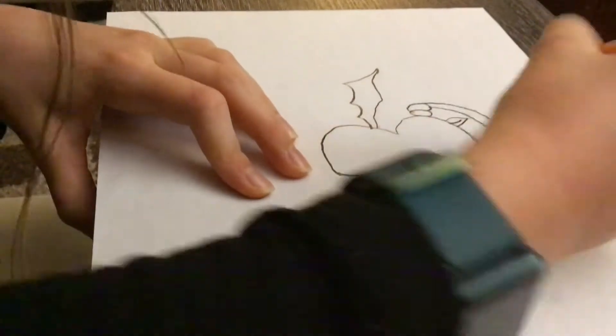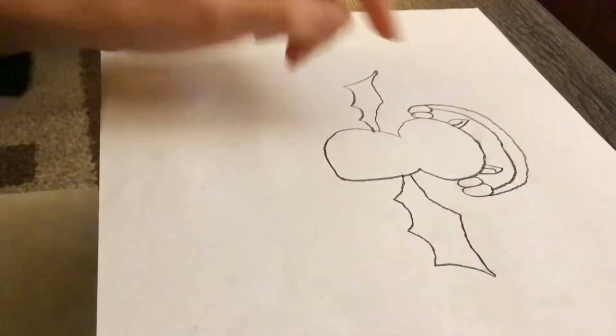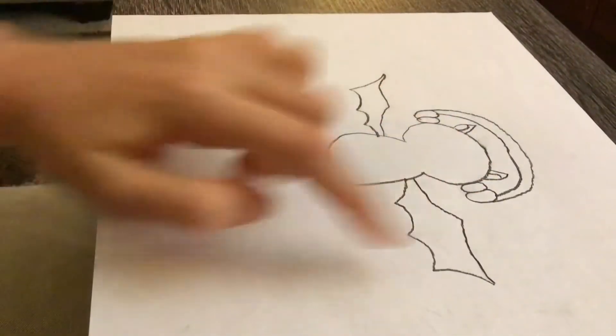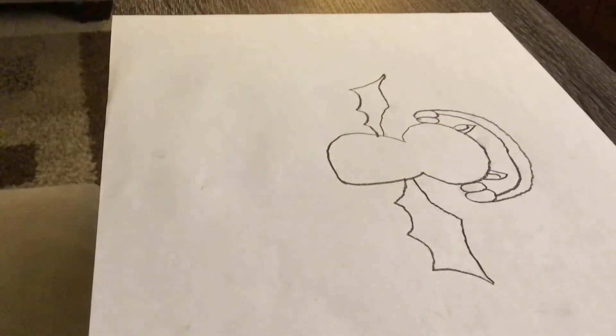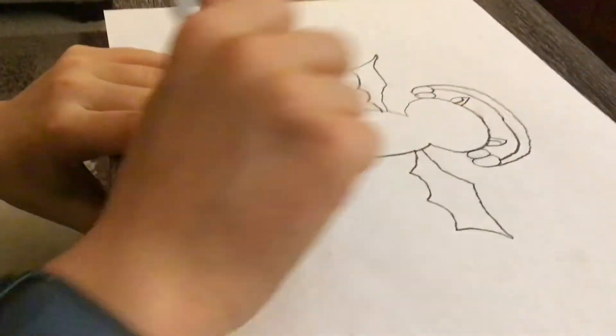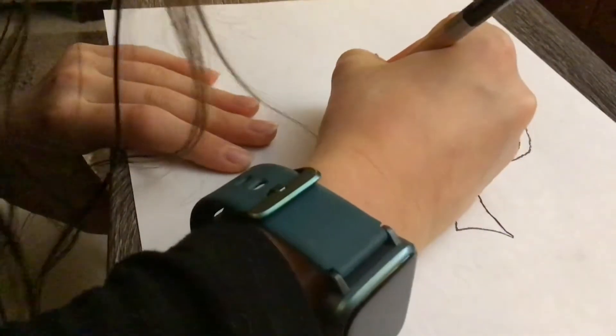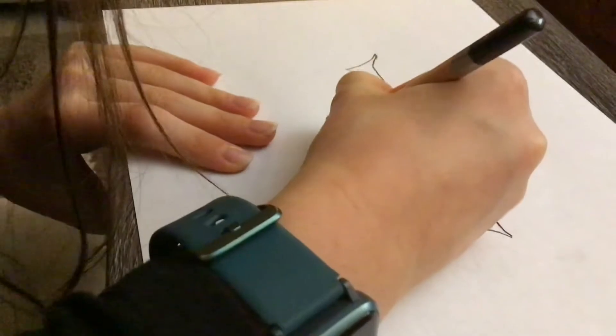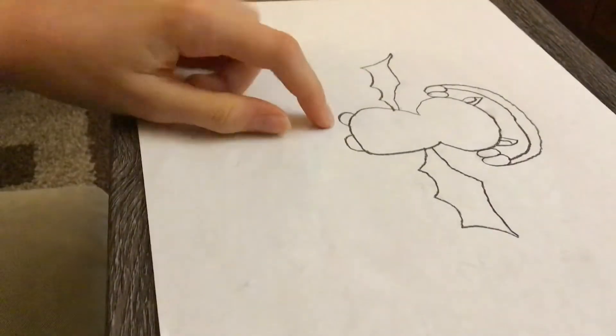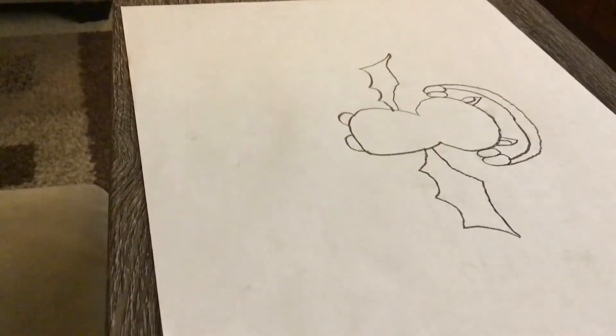Anyway, now you're gonna draw some ears. So you're probably gonna want to draw a line and then make a swerve line to connect it. Draw the insides by drawing maybe a swerve line. I hope I'm explaining it pretty good to you. Now you're gonna draw a little tiny oval half feet.